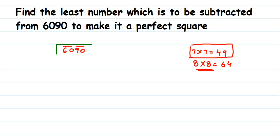So to summarize the first two steps: pair up from the right side, then choose a divisor whose square is closest to the first pair. Here 7×7=49. We subtract 49 from 60 and get 11. Now we drop the second pair — the entire pair 90 — bringing down to get 1190.